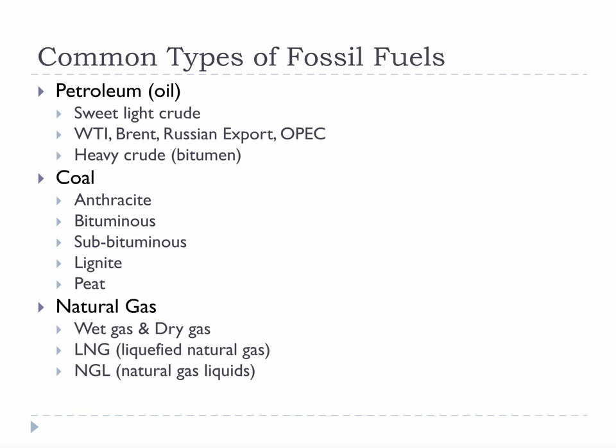Likewise, there are four major types of coal and peat from which many coals form: anthracite, bituminous, sub-bituminous, and lignite. Natural gas really only comes in two types: wet and dry.